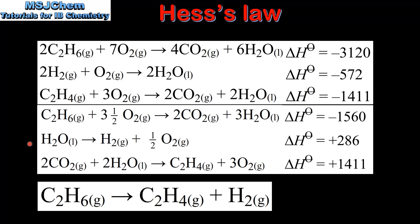Our next step is to form the final equation by cancelling out the same things on opposite sides of the arrows. The three moles of water in the first equation cancel out with the three moles of water in the second and third equations. The three and a half moles of oxygen in the first equation cancel out with the half mole of oxygen in the second equation and the three moles of oxygen in the third equation. Finally, the two moles of carbon dioxide in the first equation cancel out with the two moles of carbon dioxide in the third equation.